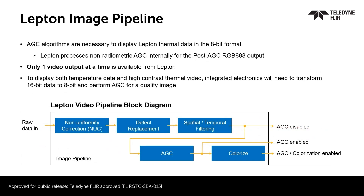If the AGC is done on the camera, the post-AGC RGB 888 output comes from the camera. Use it for designs that do not require radiometry and only need to display contrast in the scene. Only one video output is available from the camera, so if both temperature data and high contrast video are required, AGC will be done by the integrator's platform. Teledyne FLIR can help provide advice for this type of image processing, but ultimately it will require implementation by the integrator.